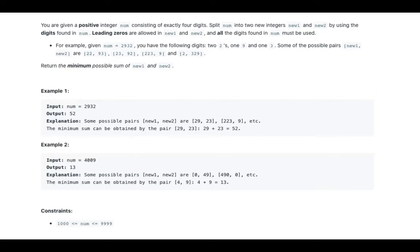Some of the possible pairs new1, new2 are 22 and 93, 23 and 92, 29 and 23, and 23 and 29. Return the minimum possible sum of new1 and new2.